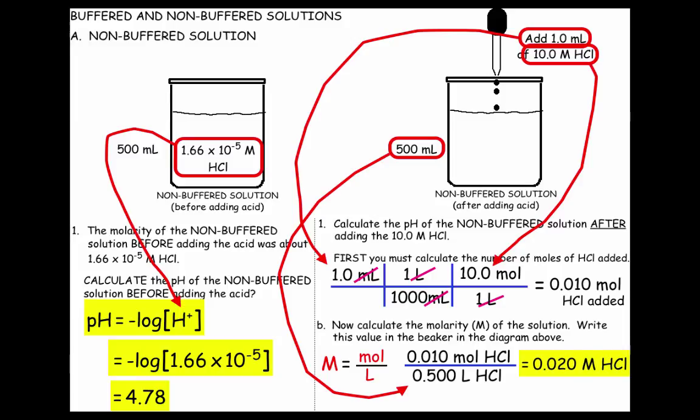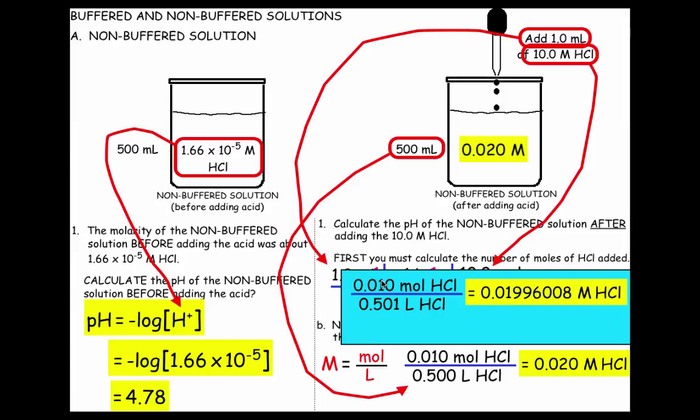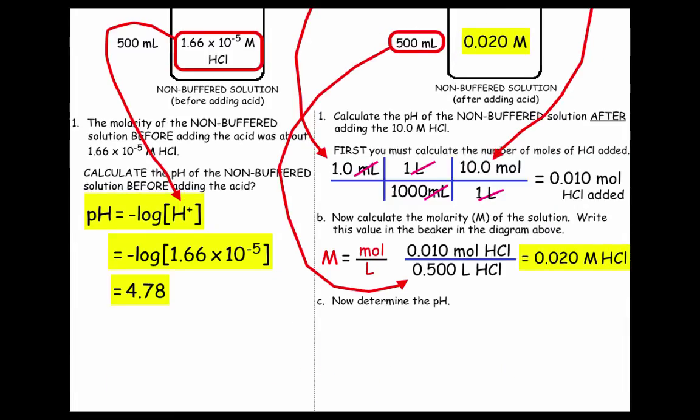We're then going to write that in the beaker, and that's the concentration of the HCl now. If you take a look, some people might say, hey, you're adding 1 milliliter to 500, so isn't the new volume 501? And the answer is yes, but if you notice, if you calculate it out and use sig figs, you get the same answer. Remember, we're adding small amounts, so we can ignore that amount in our calculation. Now we're ready to calculate the pH.